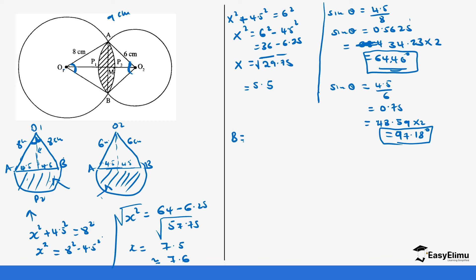The area of the sector is going to be our angle. For the big one, it's going to be 64.46 over 360 times 22 over 7 times 8 times 8, minus the area of the triangle which is one half. Our base is 9, our height for the bigger circle is 7.6.